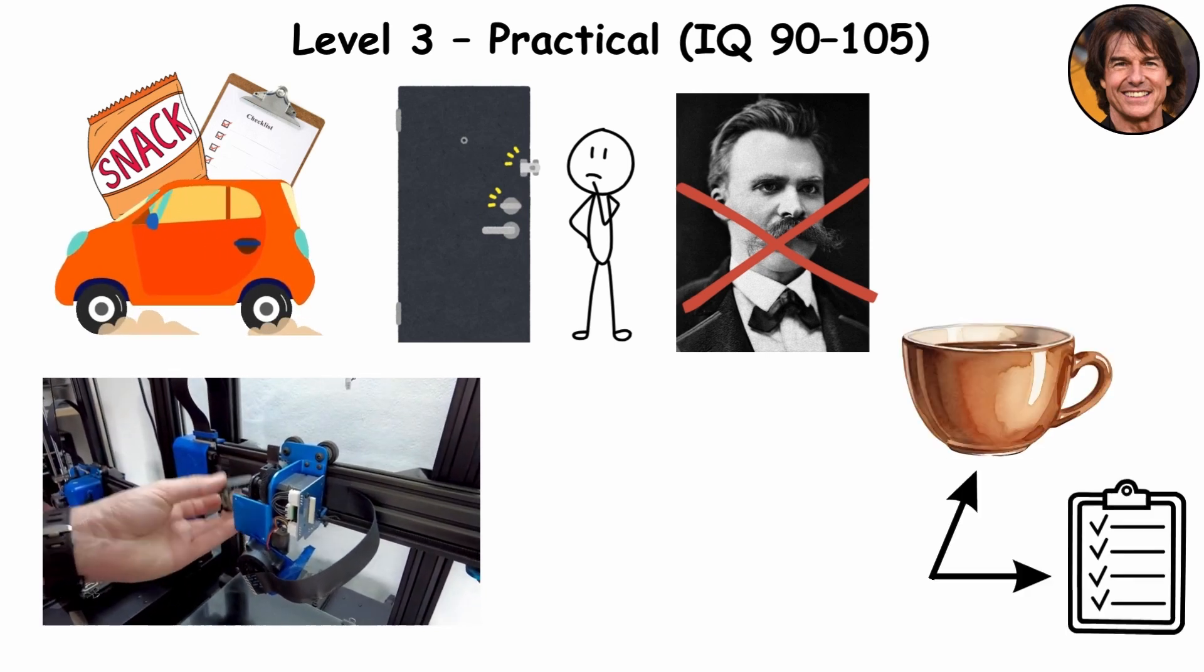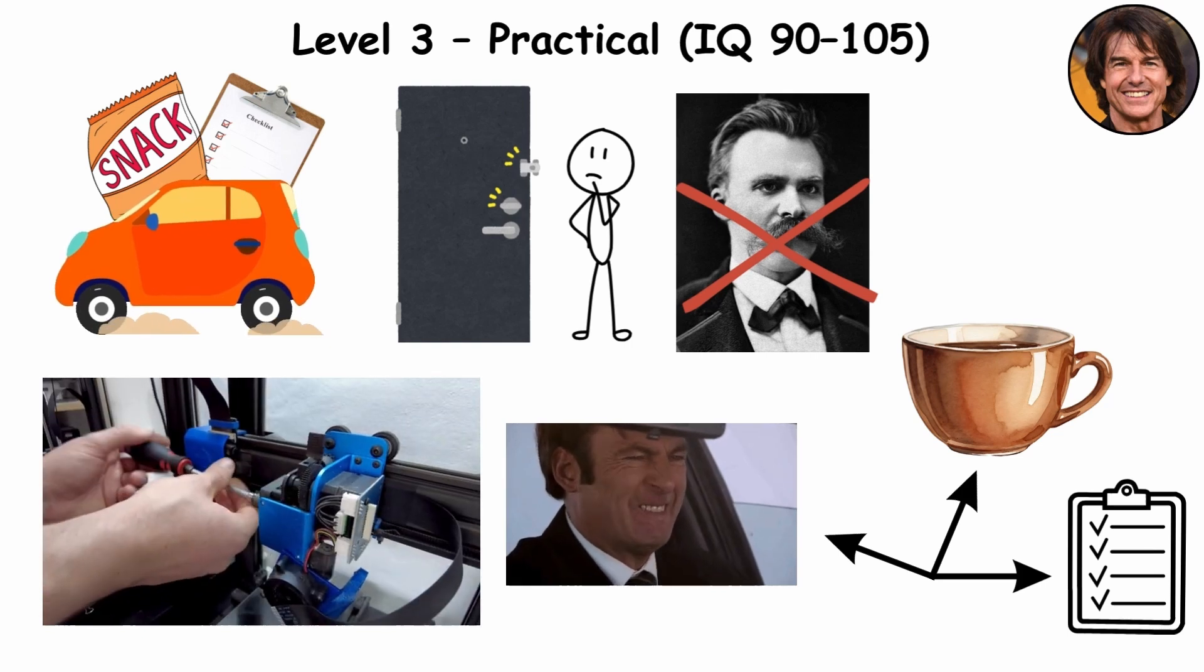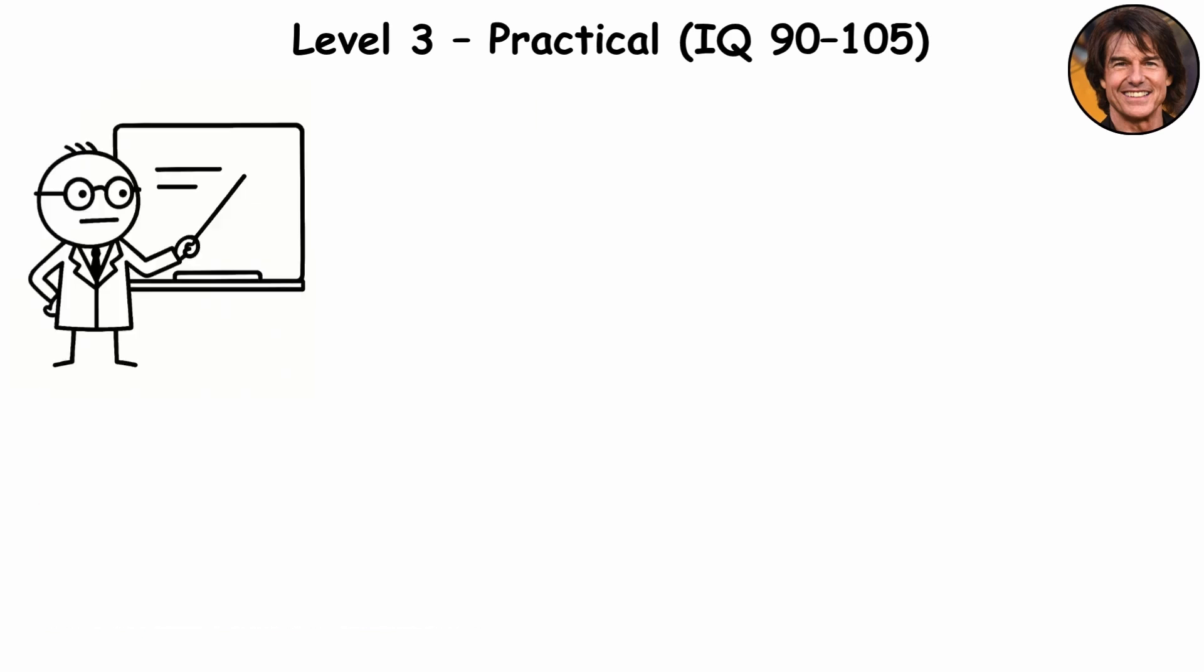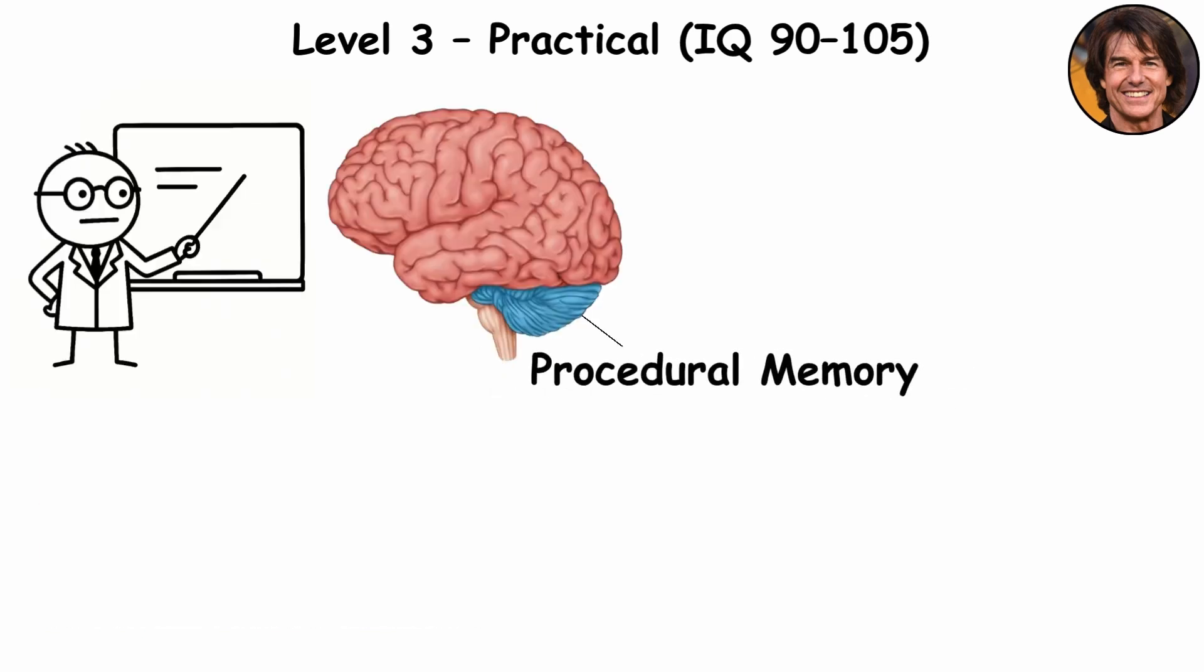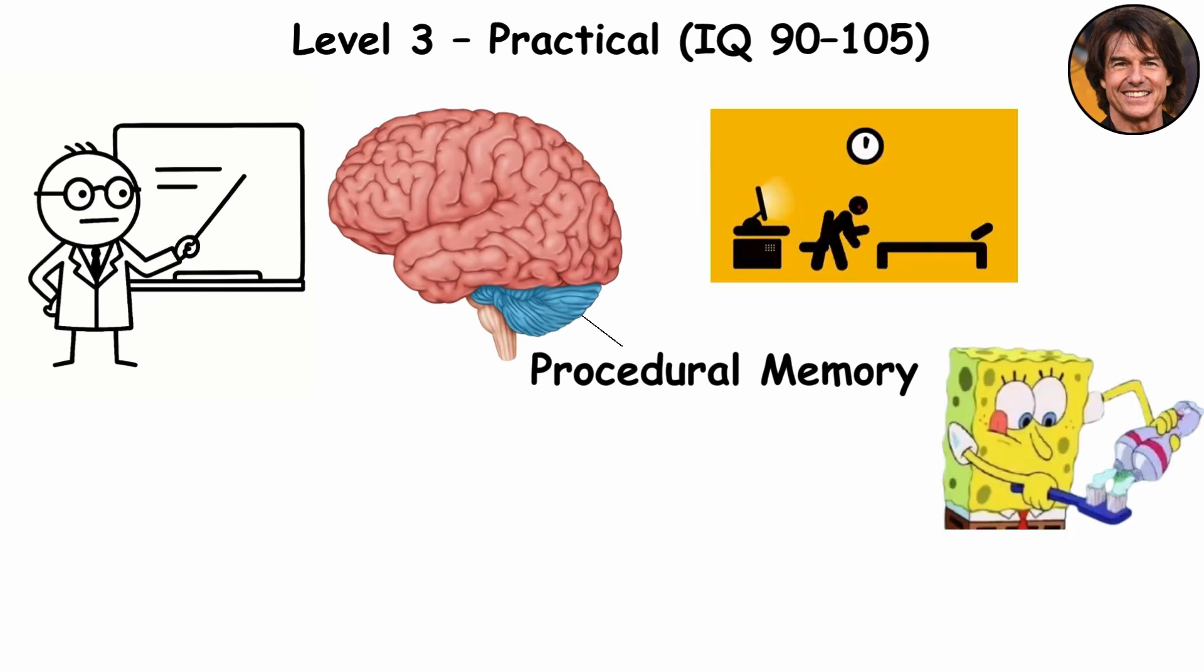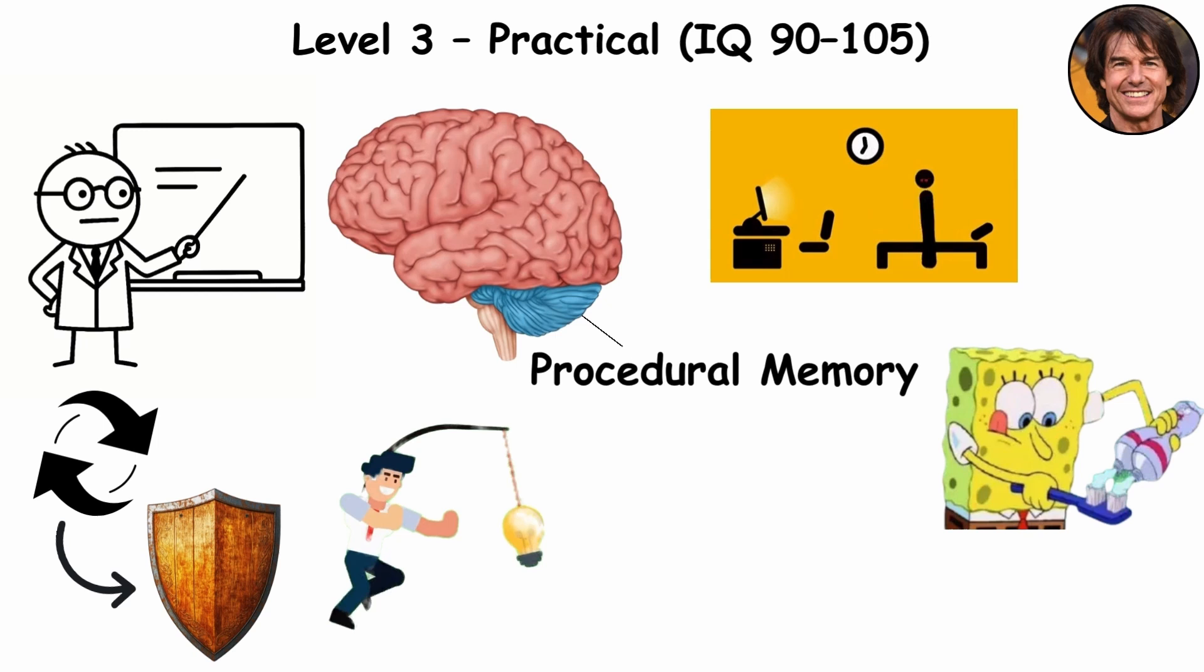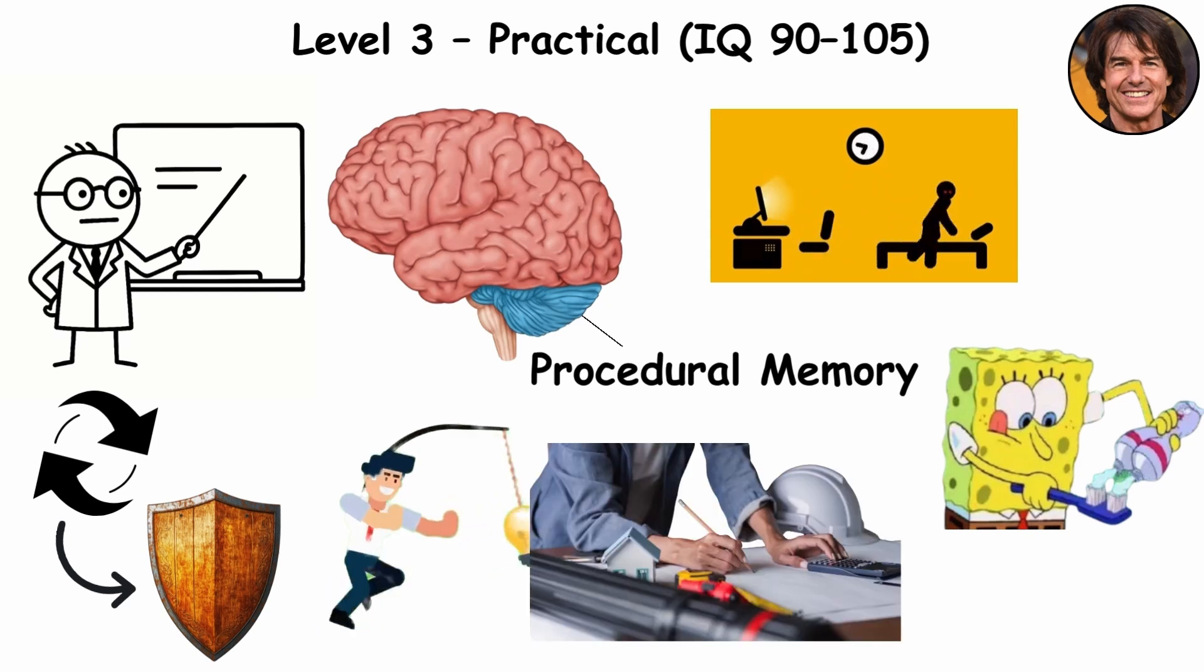Their brain runs on coffee, checklists, and mild exasperation. Neuroscientists would say their brains rely more on procedural memory, the mental system that stores habits and routines. But honestly, repetition is their secret weapon. They don't chase ideas. They execute them.